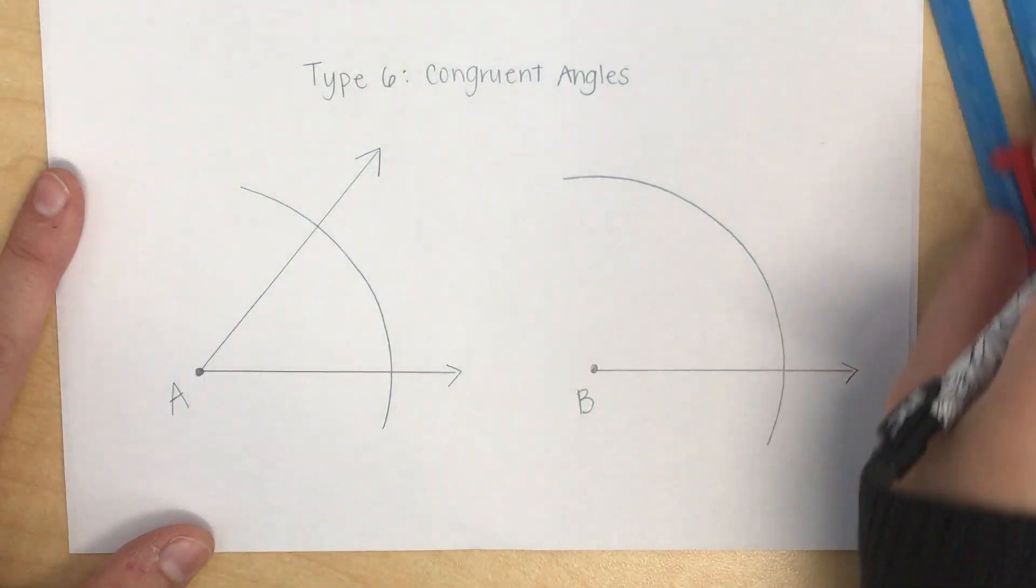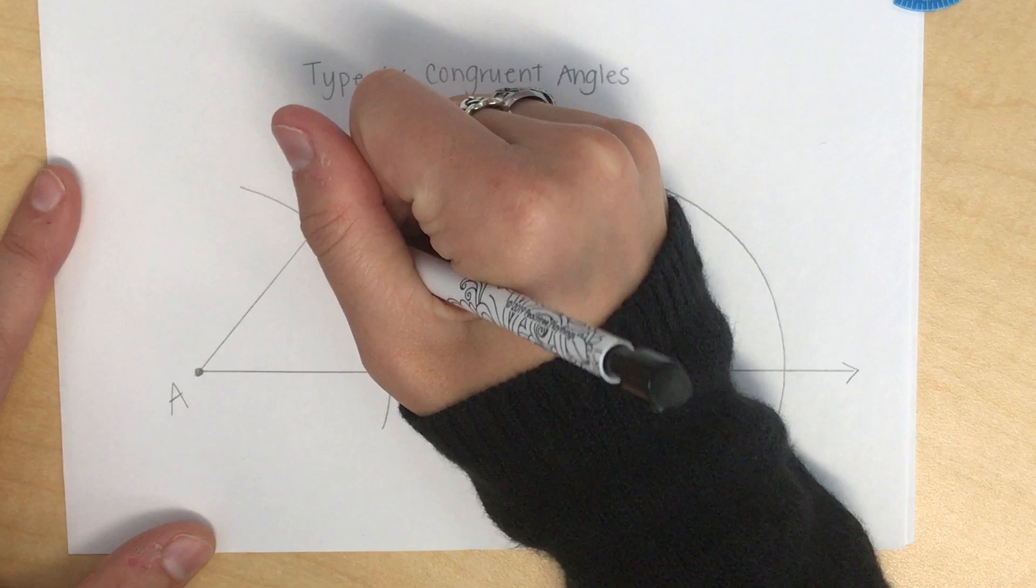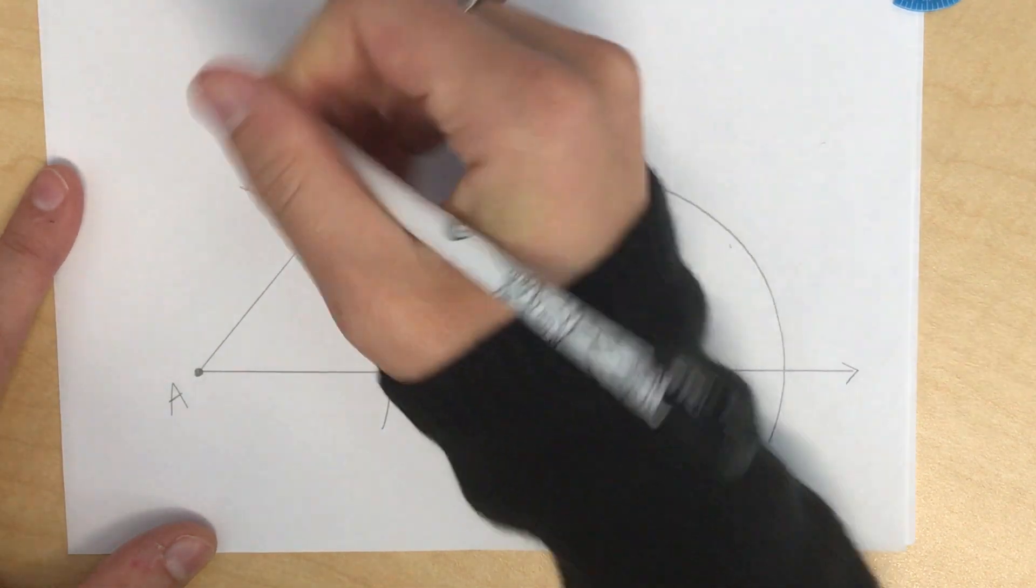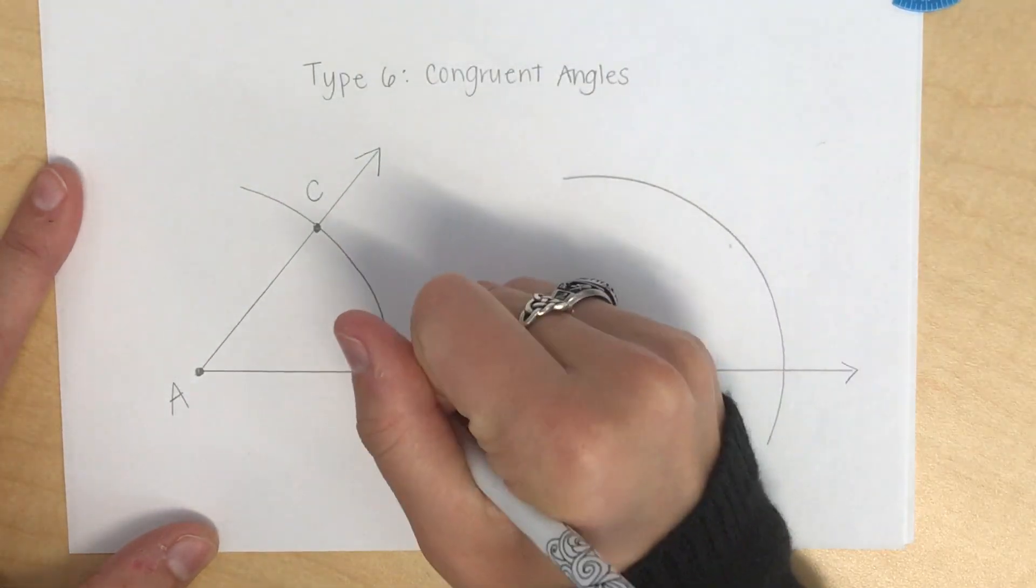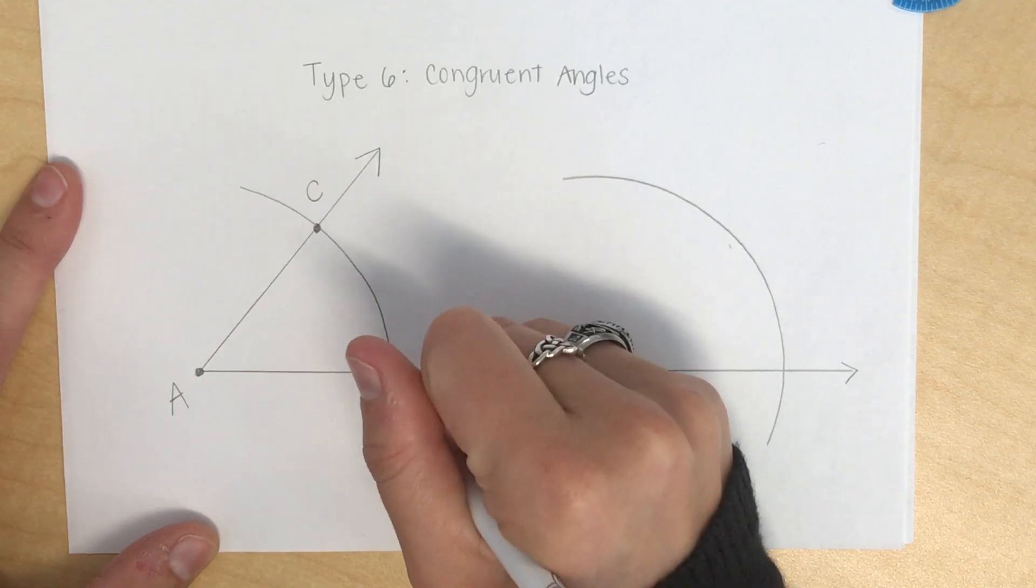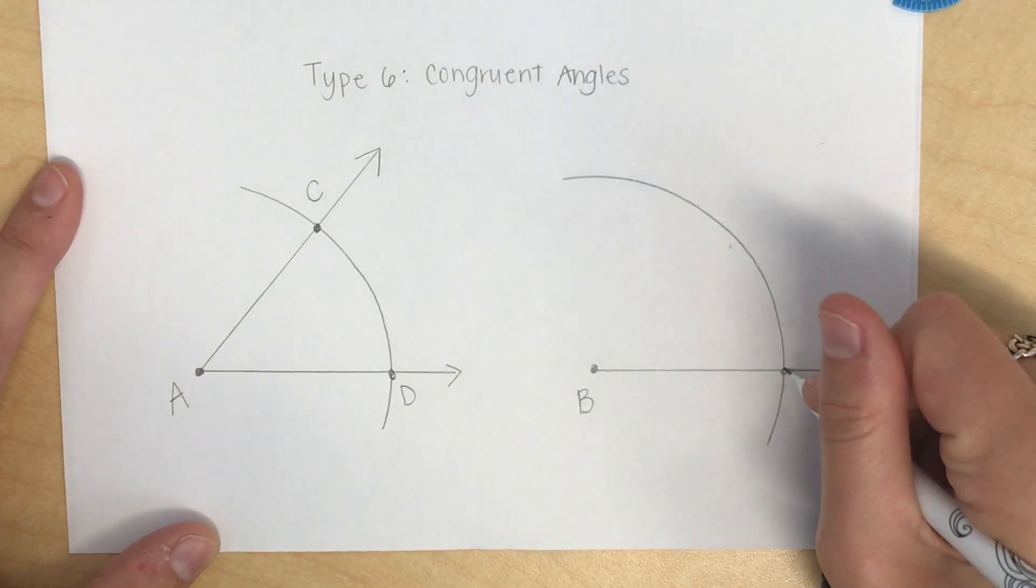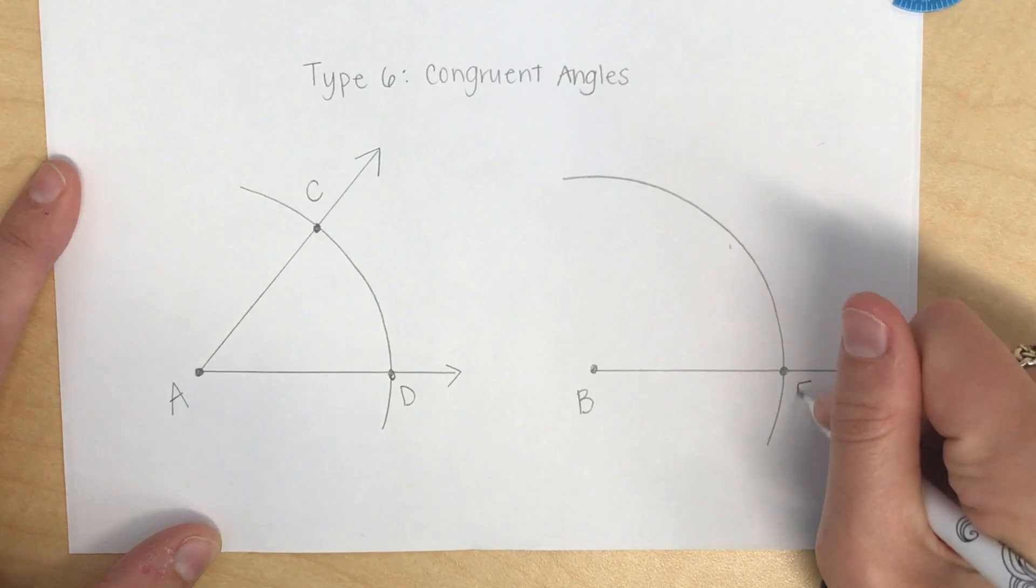Now I'm going to name my intersection points. This one on the top over here by A, I'm going to name this point C. I'm going to name this other intersection point D. And then I'm going to name this point over here as point E.